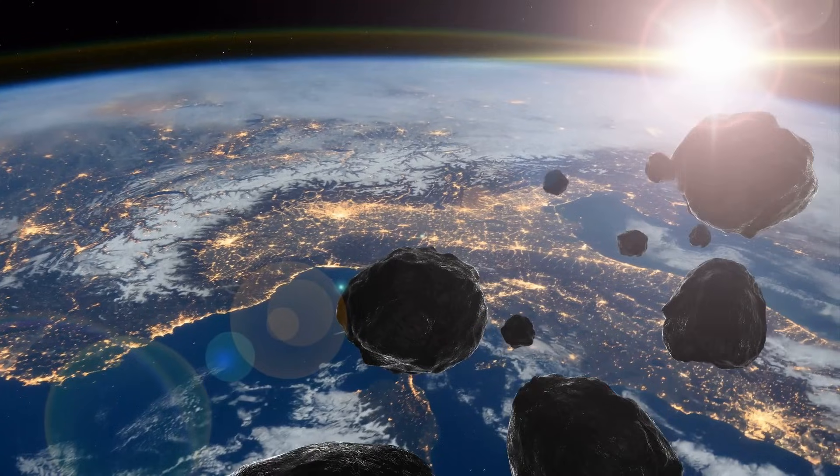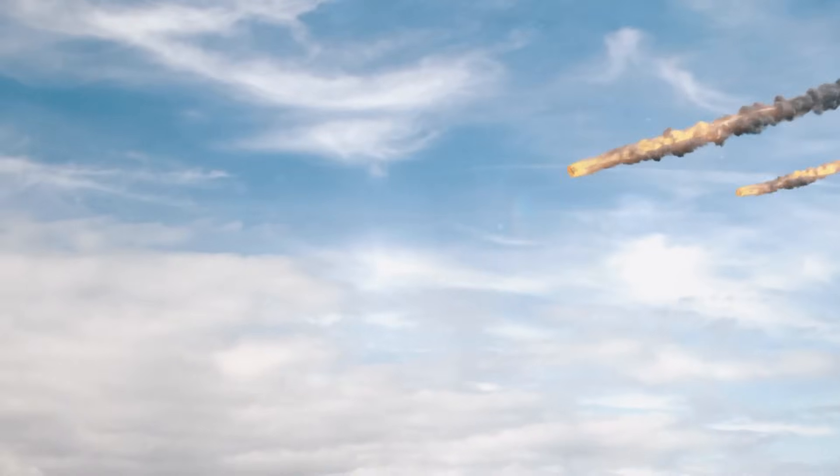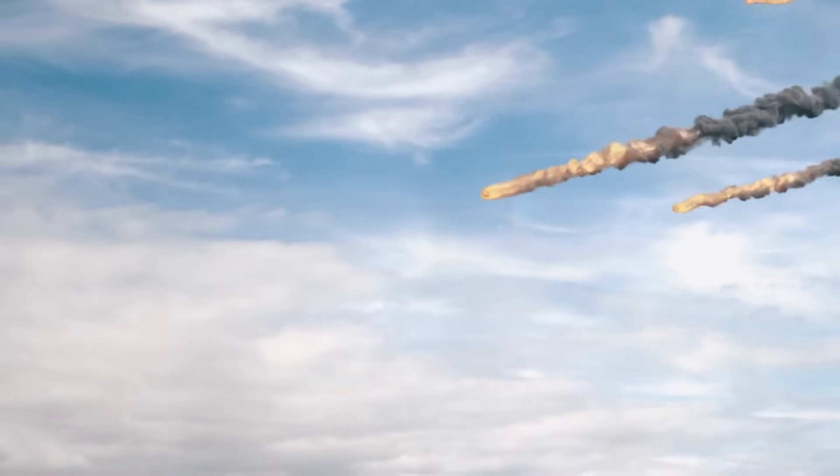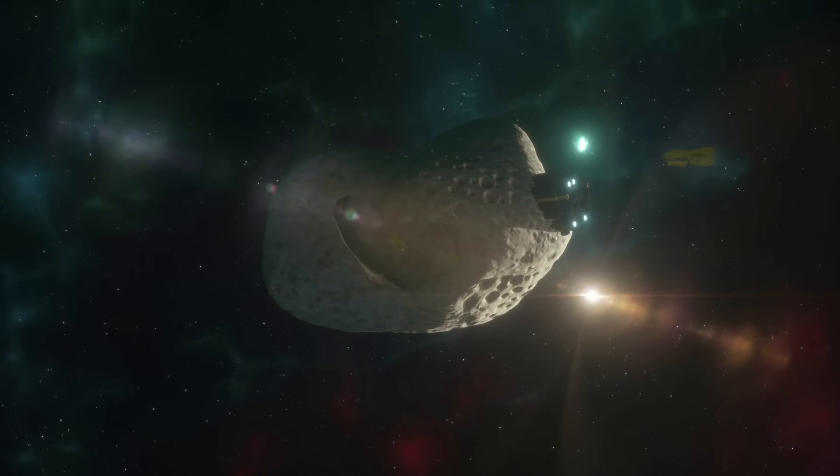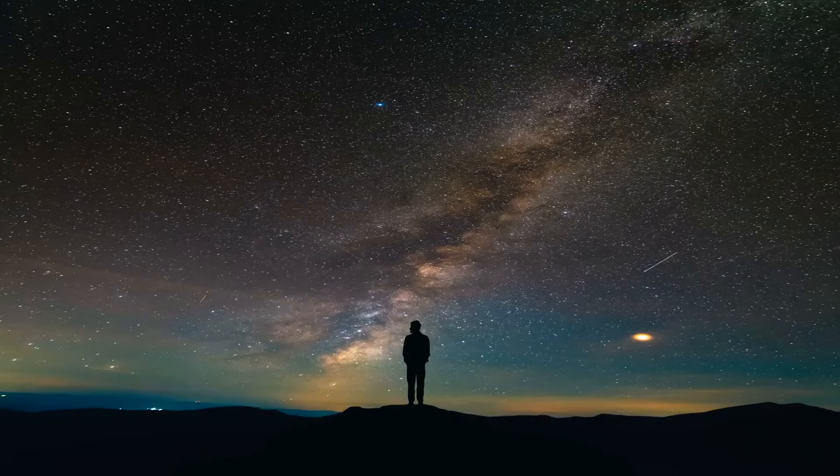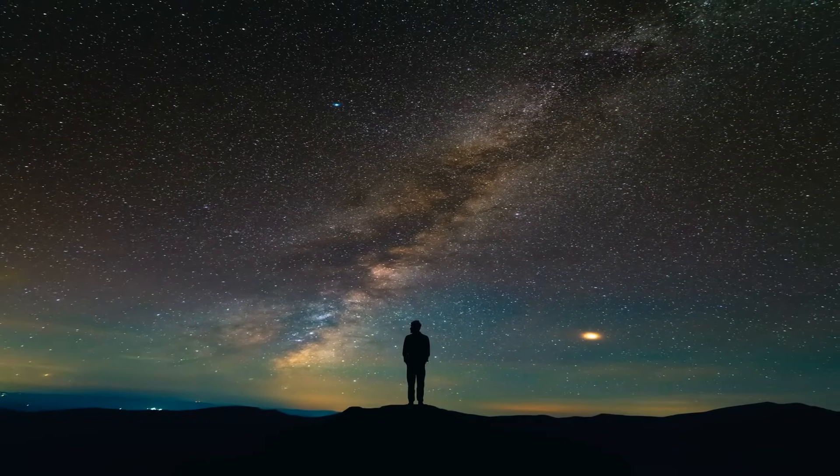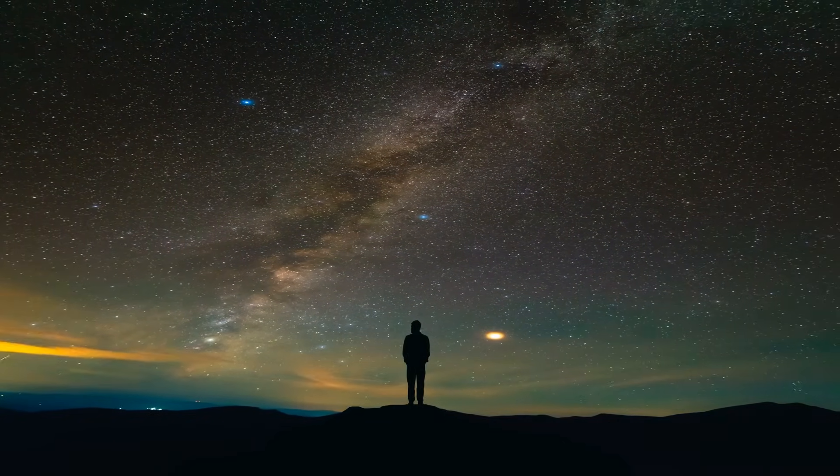However, when an object passes very close to Earth, the uncertainties increase significantly. This is due to the gravitational force exerted by Earth, which alters the object's orbit, as well as the potential loss of material from the asteroid's surface caused by the Earth's pull. This is why it is crucial for Osiris Apex to observe Apophis before and after the close approach. By doing so, we can better understand the effects of Earth on Apophis and enhance our understanding of the universe.